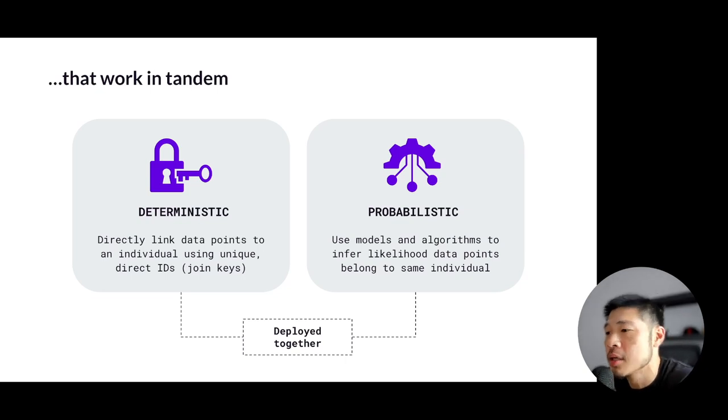This allows marketers to reach larger segments of their audience with a reasonable degree of confidence and accuracy. And then continuous improvement—as new deterministic data becomes available, that can strengthen the data spine that we mentioned, which can validate and strengthen the probabilistic inferences, which leads to a continuously improving, ever-improving ID graph.